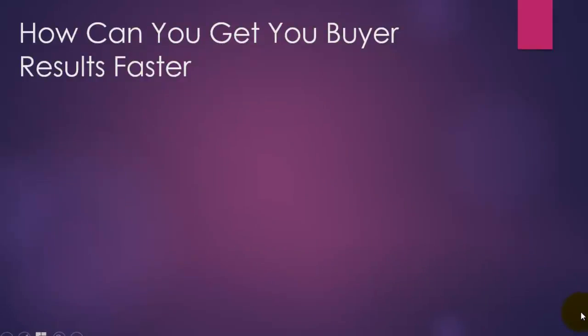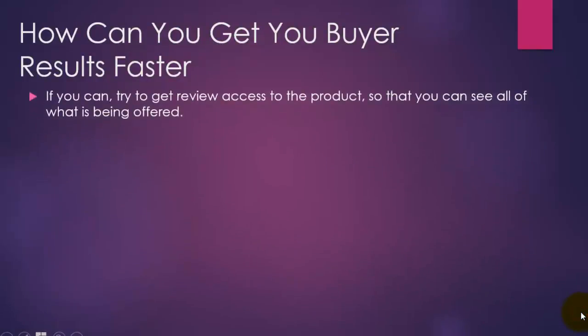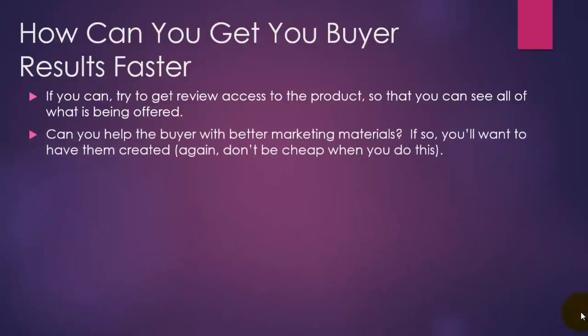To get your buyer results faster, try to get review access to the product so you can see what's being offered. Remember, you are trying to find the weakness in the product so you can create a bonus that brings it up to what the buyer really needs in order to implement quickly. Can you help the buyer with better marketing materials? If you're in the make money online niche, can you give that buyer something they can cut and paste — take your marketing materials and implement instantly without having to create their own?